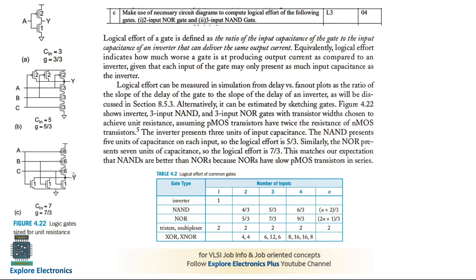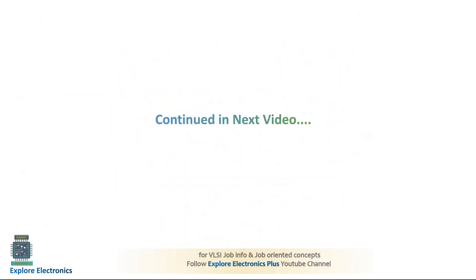For the three-input NOR gate, C_in = 7 (6+1) so logical effort = 7/3. For the two-input NOR gate as asked in the question, there are two transistors in pull-up and two in pull-down, giving C_in = 5, so logical effort = 5/3. This completes the second module questions. Third module questions will be continued in the next video.